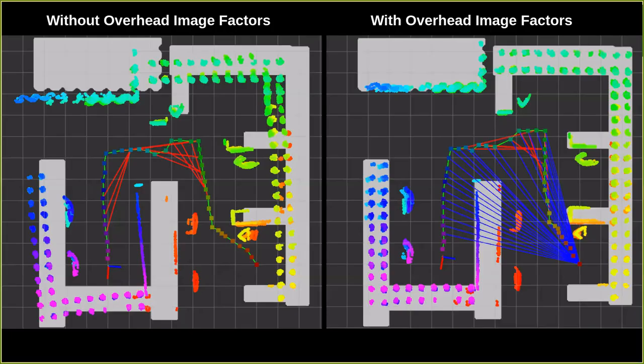On the left is an example of a simulated SLAM run. Green lines show odometry factors, and red lines show loop closure factors. You can see, even with loop closures, there's heavy drift. On the right, we add blue factors, which are the overhead image factors. You can see a drastic increase in SLAM mission quality, and we still utilize the existing factors in the SLAM solution.